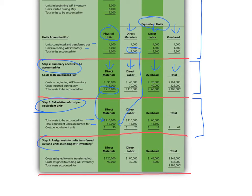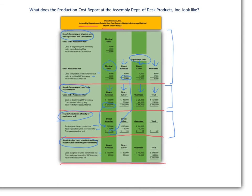At the very bottom you'll find step four, where we take this cost per equivalent unit and apply it to the units that have been transferred out and the units still in ending work in process inventory. So steps one, two, three, and four are all summarized in the production cost report.